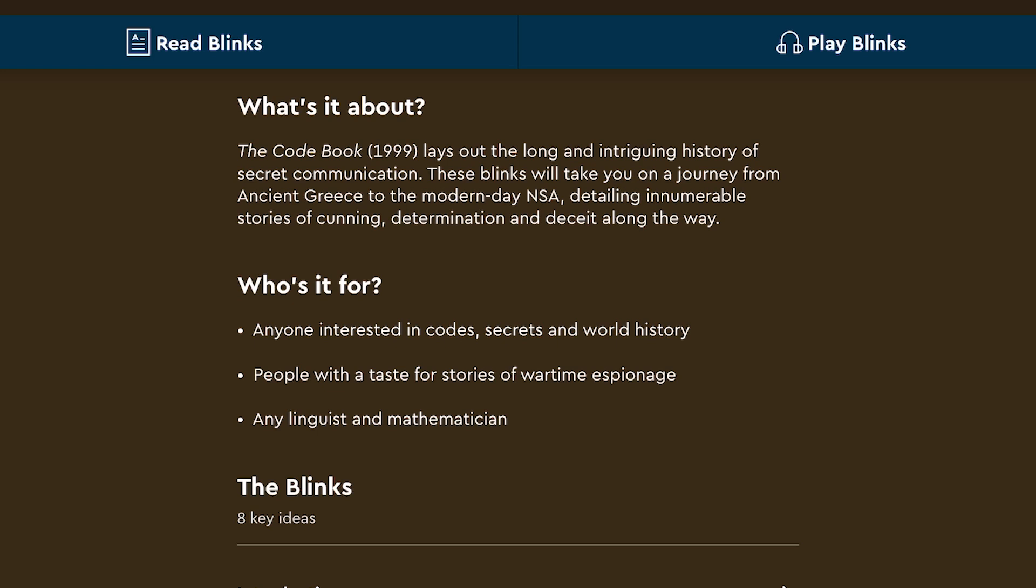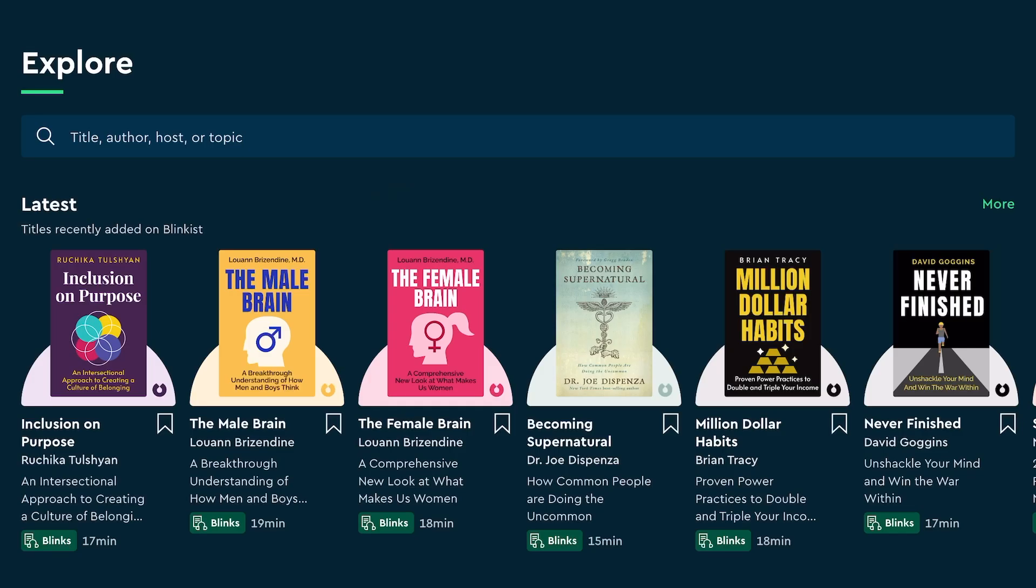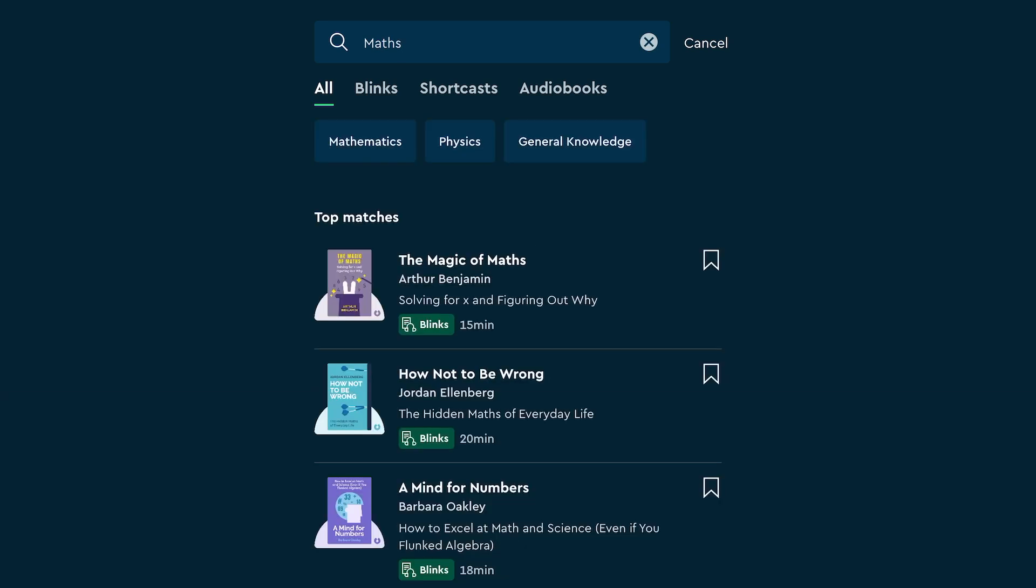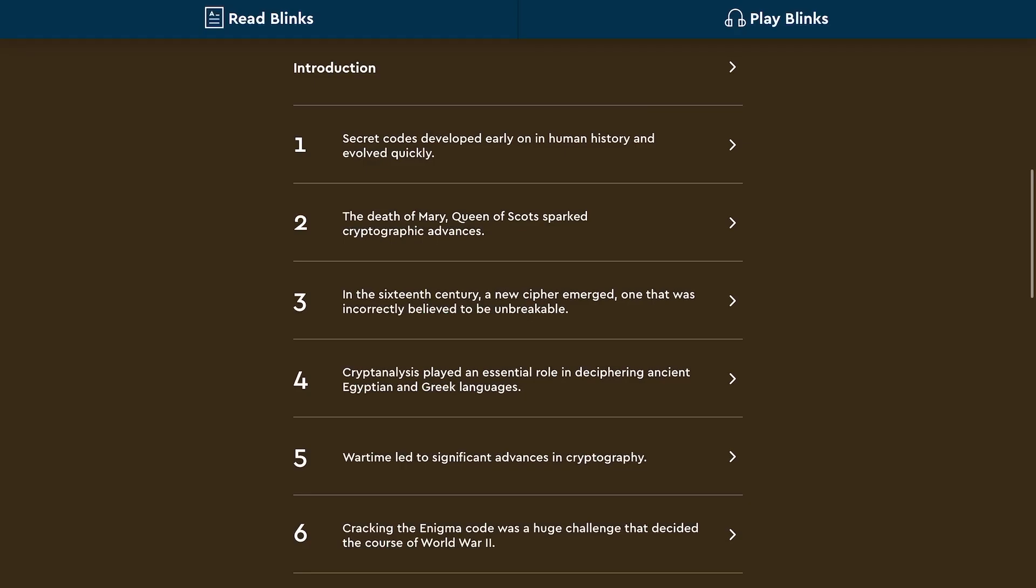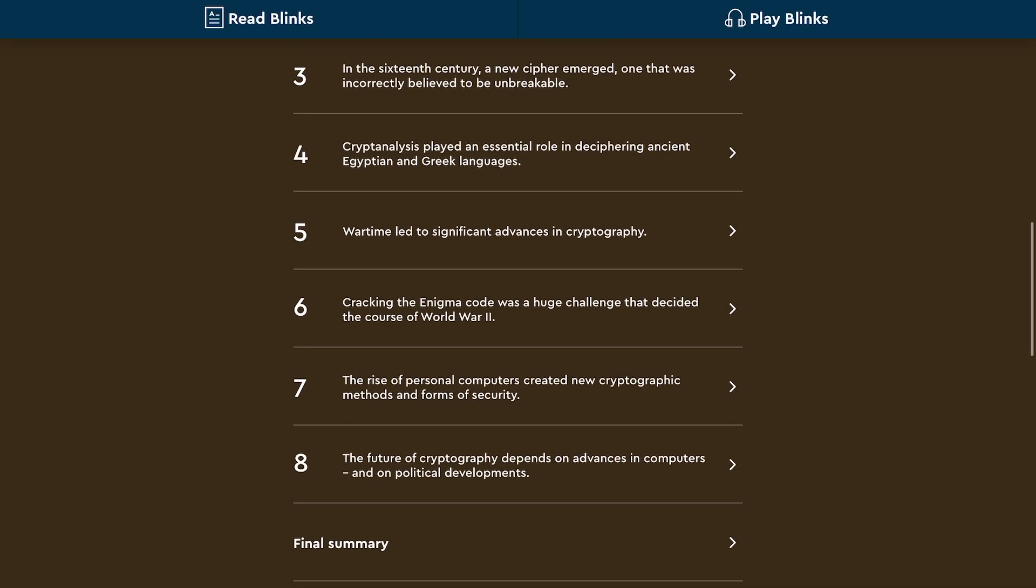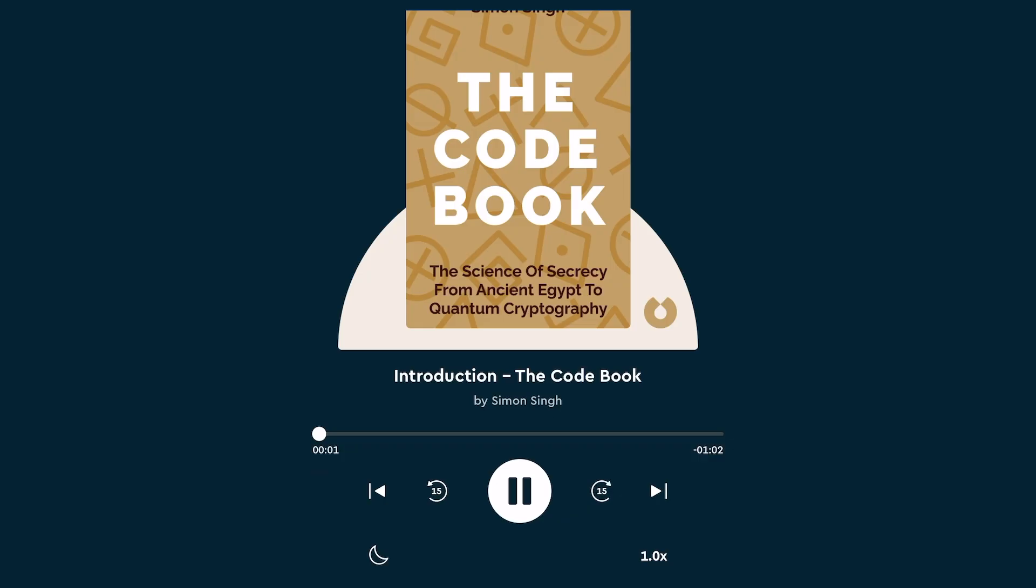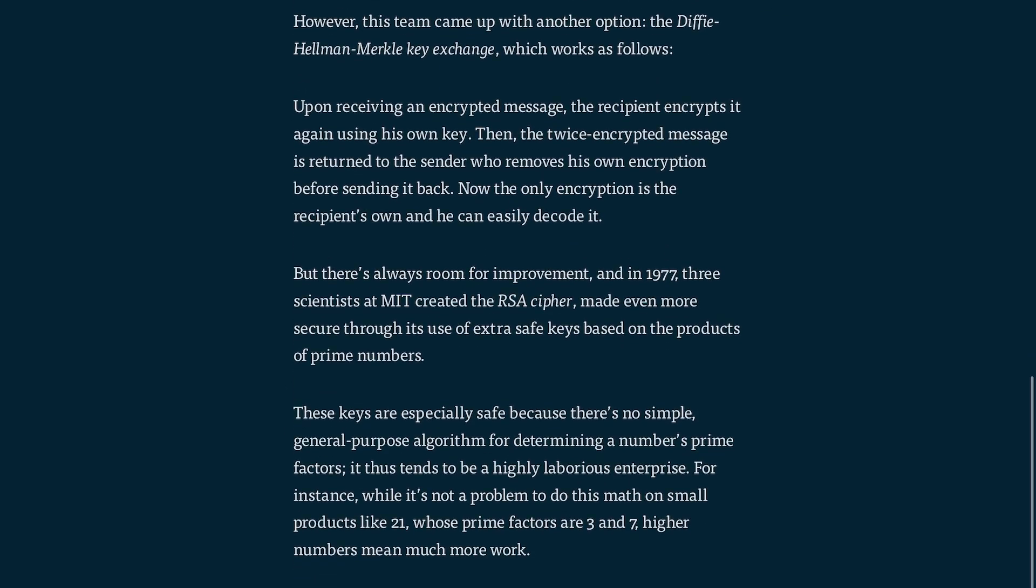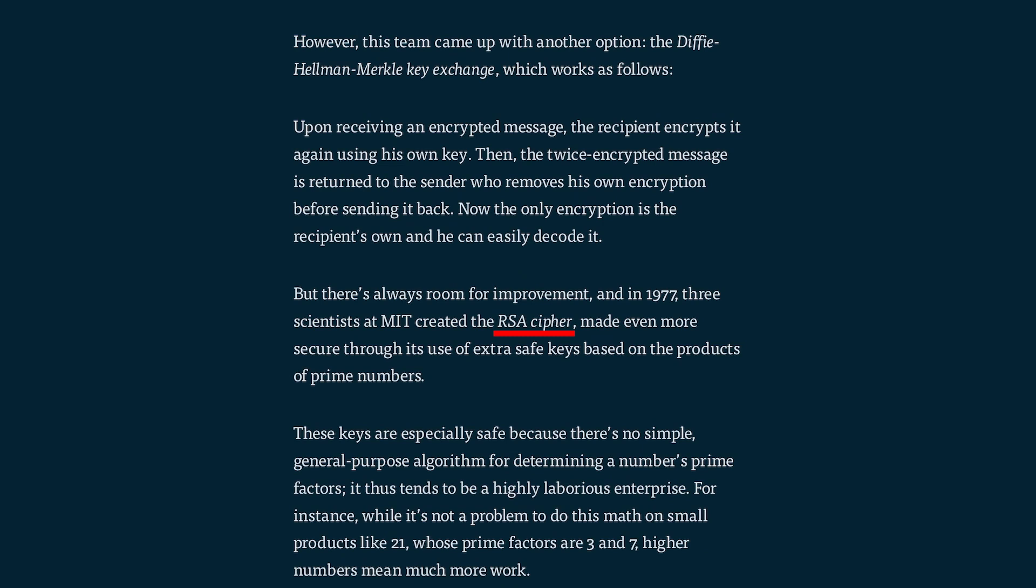The Code Book by Simon Singh provides an entertaining look at the long and intriguing history of secret communication from ancient Greece to the modern day NSA. This is just one example from over 5,500 titles available on Blinkist, the app which helps you to understand the most important ideas from non-fiction books and podcasts in only 15 minutes. Here you can see the 8 blinks present in The Code Book, each one comprising of a digestible segment which you can either read or listen to.